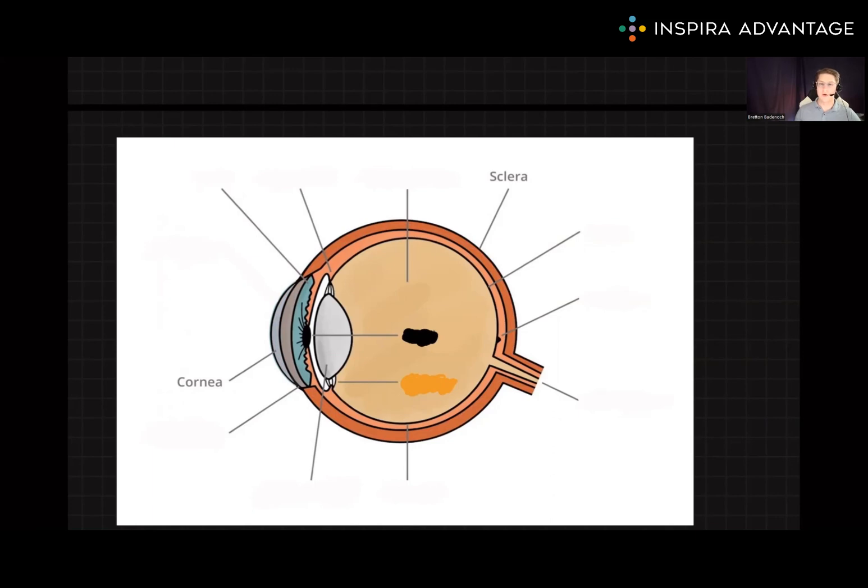Underneath the sclera, we have the choroid. The choroid contains vascular tissue that supports the functioning of the eye. Going one layer deeper, we reach the retina. This is where light hits and transduces a signal. More on that later.